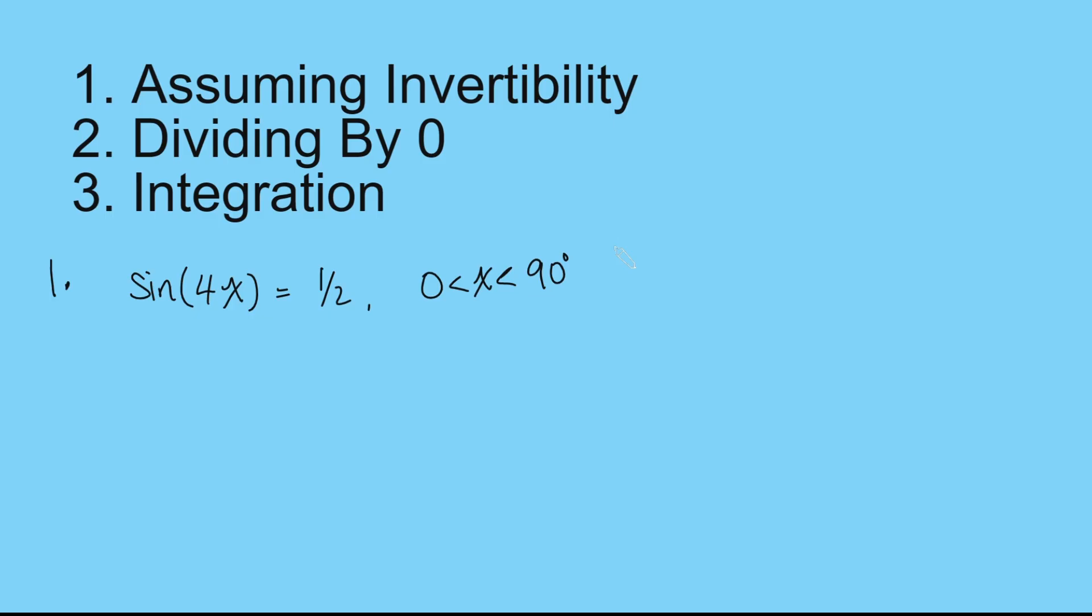So the first one is assuming invertibility. And what I mean by that is just assuming that a function is invertible, and a lot of the times it's not. And this I believe is the most common mistake because at GCSE you kind of do assume most functions are invertible. At A-level, however, you cannot do that. So I've got an example question here. So imagine I'm trying to solve this question, sine of 4x is a half, and I know that x is between zero and 90 degrees.